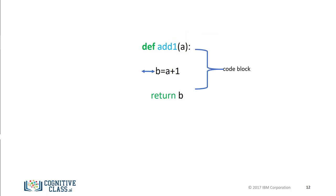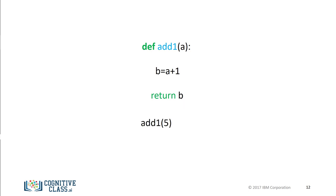We have a code block with an indent. For this case, we add 1 to a and assign it to b. We return or output the value for b. After we define the function, we can call it. The function will add 1 to 5 and return a 6. We can call the function again, this time assigning it to the variable c. The value for c is 11.